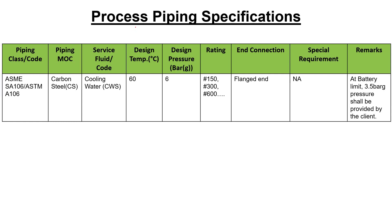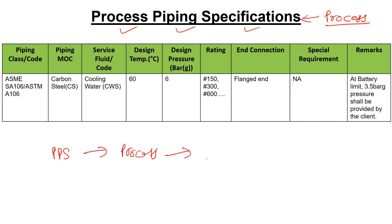In this video we are going to discuss what is process piping specification and the significance of this document. This is the primary document of the process department, and it is sent from the process department to the piping department. After that, the piping department prepares a PMS — that is, piping material specification.